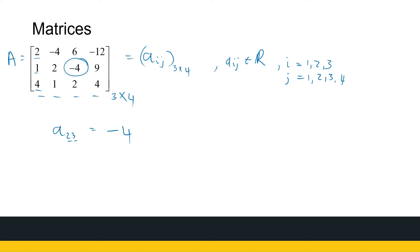Remember, it's always row by column. The size is very important and is going to play a very important role as we go forward. So always, when we start, look at the size of the matrix.